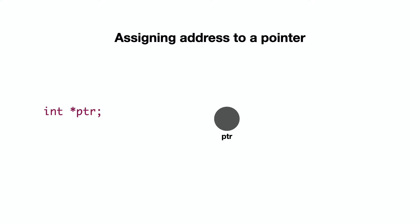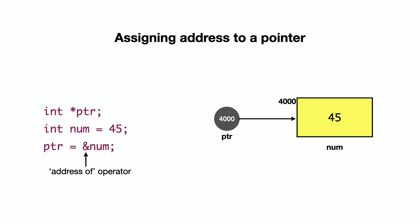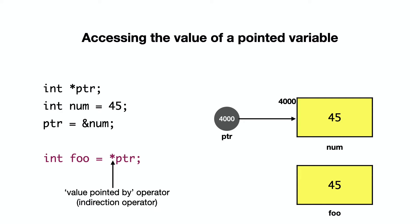Now, if I have a pointer variable and an integer variable num with value 45, I can store the address of num into ptr using: ptr equals to ampersand num. The ampersand operator gives the address of the variable. So ampersand num gives the address of num, which is 4000. PTR now holds 4000 — it points to num.